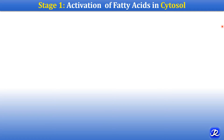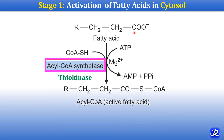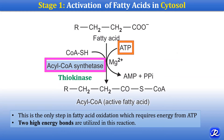Stage 1 is activation of fatty acids, and it occurs in the cytosol. The fatty acid gets activated to form acyl-CoA by the addition of coenzyme A, with the help of the enzyme acyl-CoA synthetase, also called thiokinase. Magnesium and ATP are required. ATP is converted to AMP and pyrophosphate, and pyrophosphate is hydrolyzed to inorganic phosphate — thus two high-energy bonds are utilized. This is the only step in fatty acid oxidation where ATP is required.